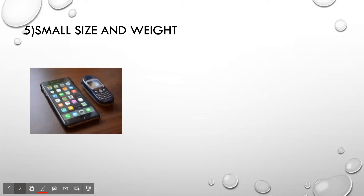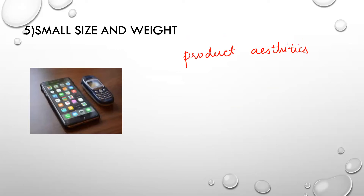Another characteristic is small size and weight. This is important because whenever you buy a product, the product aesthetics play an important role. For example, when buying a mobile phone, will you choose a sleek one or a bulky one? Nowadays we choose products which are very sleek because those are easy to handle, and naturally we also choose products where the weight is less. Product aesthetics include small size and weight, which are easy for the consumer to handle.